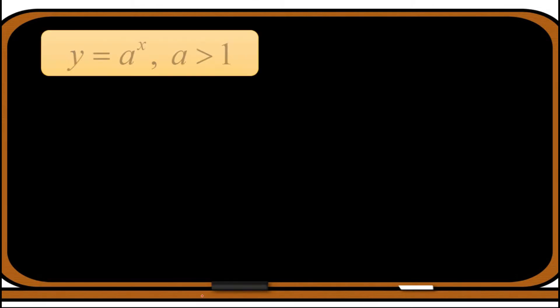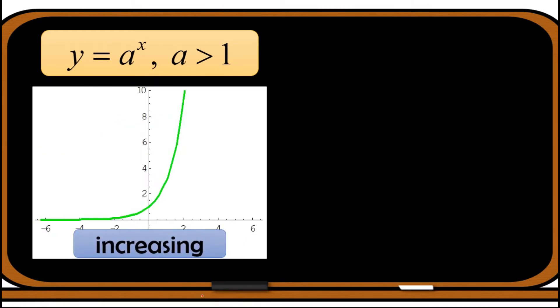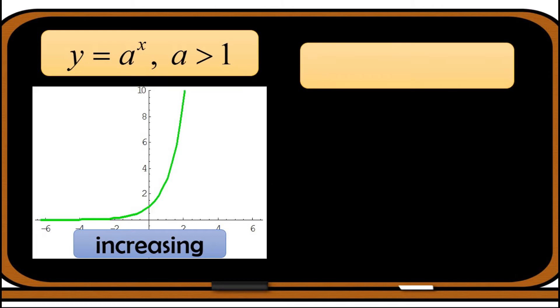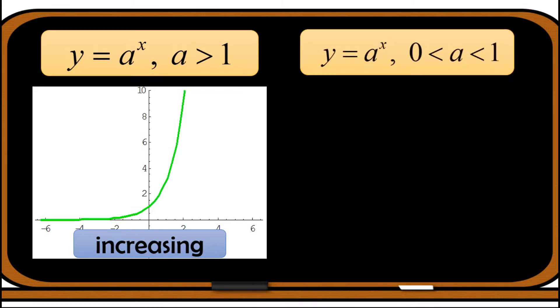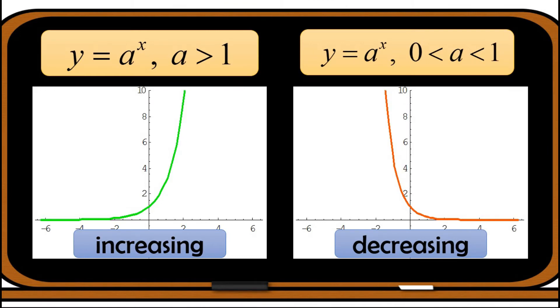Let us recall the graphs of exponential functions. First, if the base a is greater than one, then the graph increases as x increases — as x increases, y increases. On the other hand, if the base a is between zero and one, then the graph decreases, meaning as the value of x increases, y decreases.